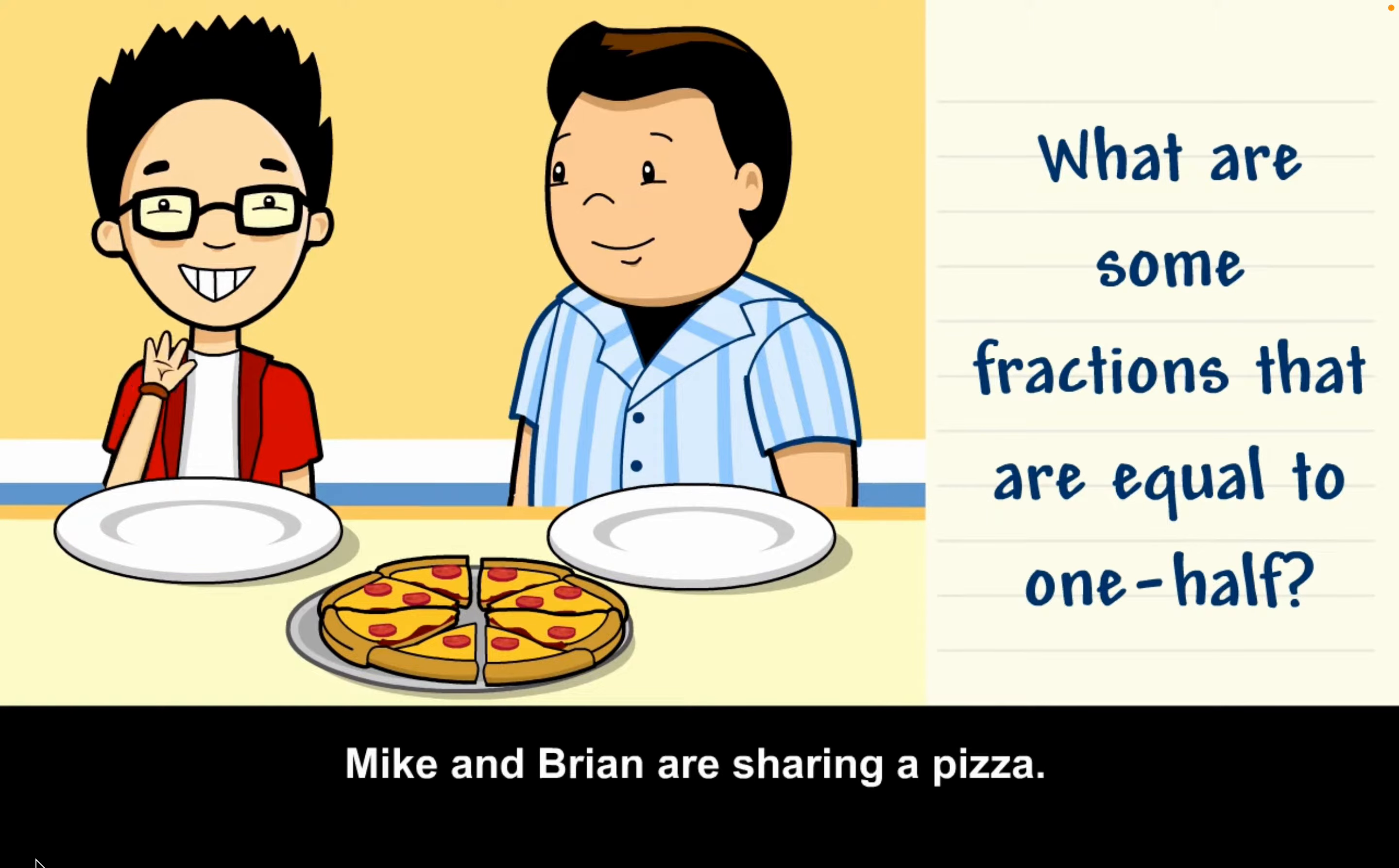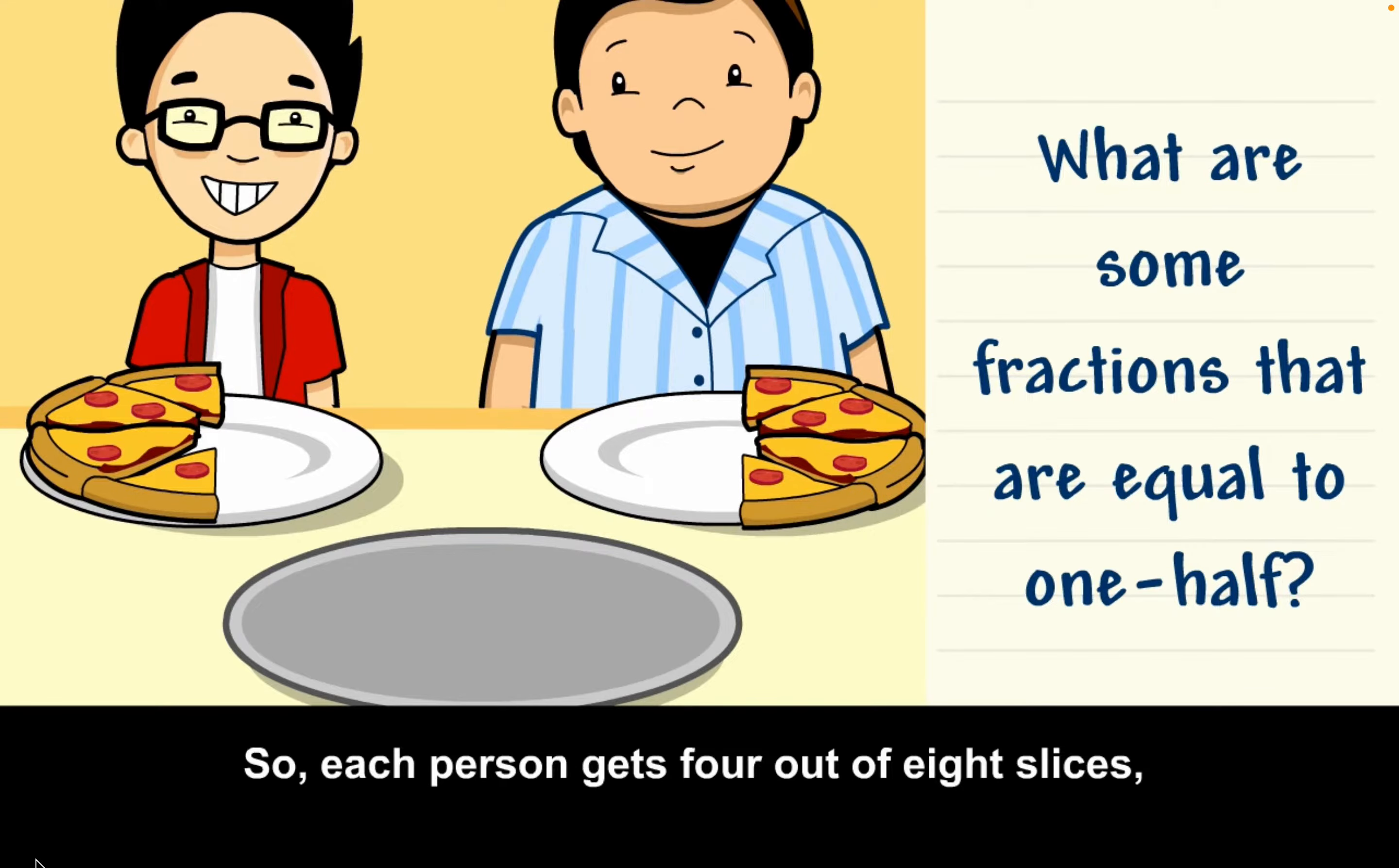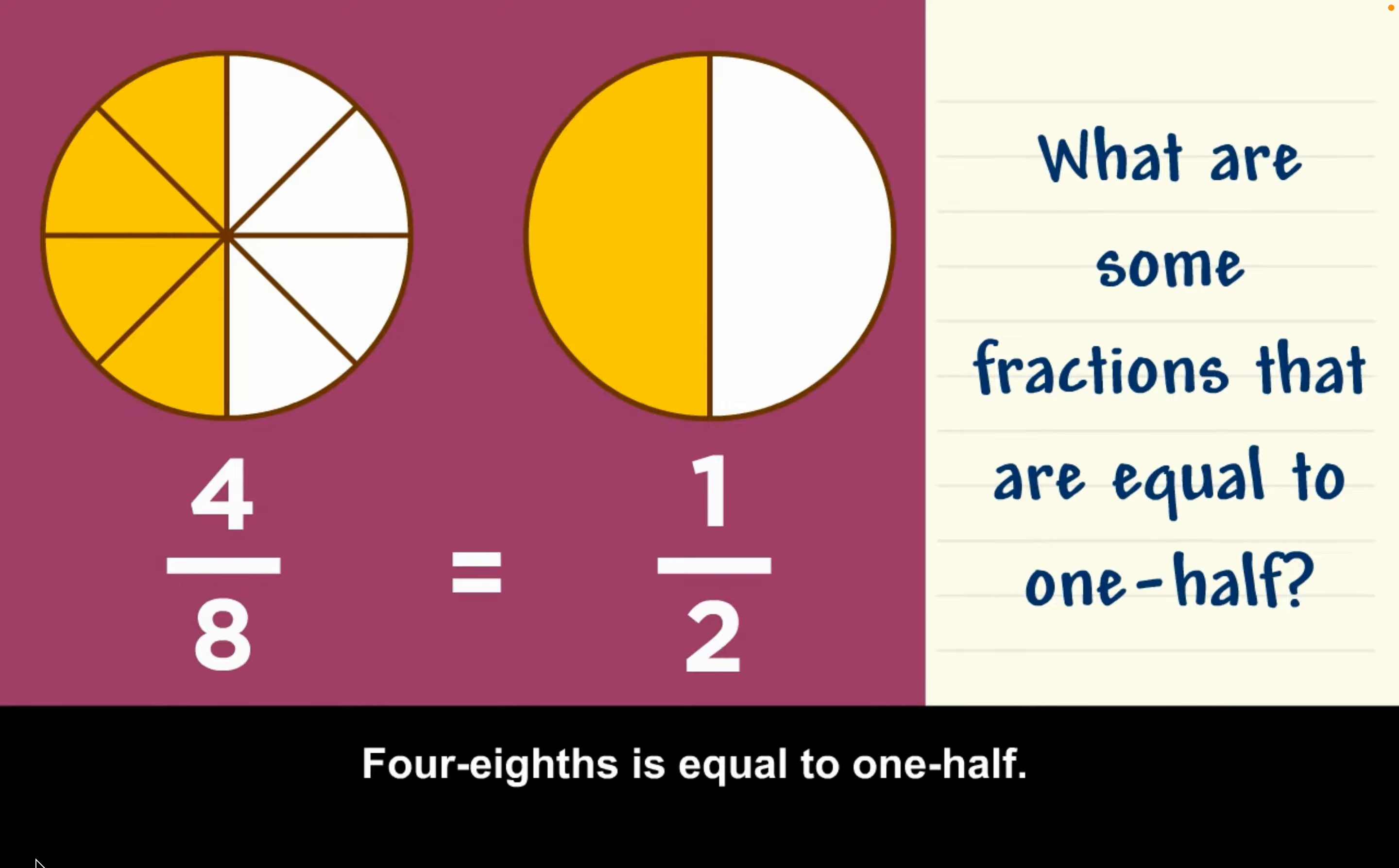Mike and Brian are sharing a pizza. Their pizza has eight equal slices, so each person gets four out of eight slices, or four-eighths of the pizza. Four-eighths is equal to one-half.